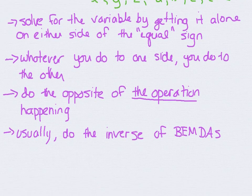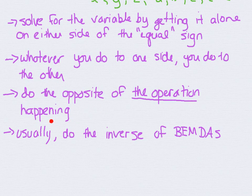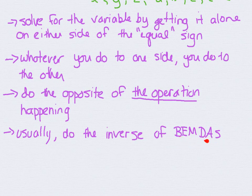Usually, how we do this is we do the opposite of the operation that is actually happening. So for example, if we see addition going on, we'll have to do subtraction, and we have to do it on both sides. A good tip that works most of the time is that when we're trying to solve for the variable, start by doing the inverse of BEMDAS. So looking at our equation, see what we can subtract and add first, and then see what you can multiply and divide. This doesn't work all the time — there are several exceptions — but as you're starting out, this is helpful to keep in mind.